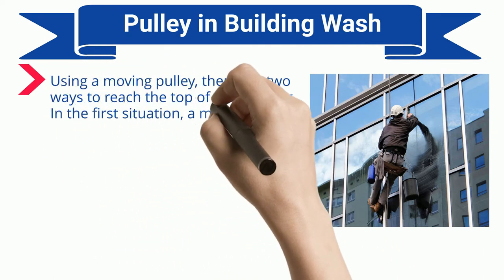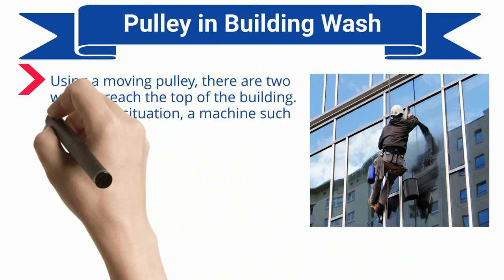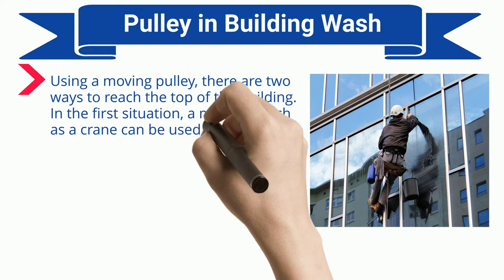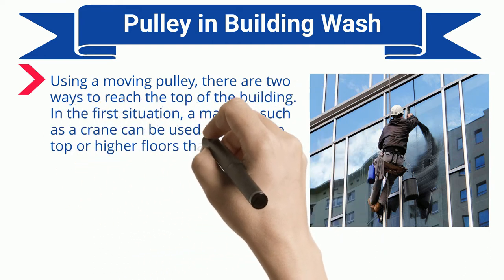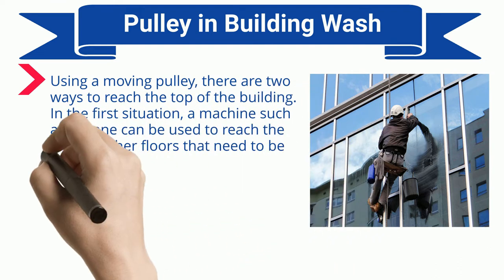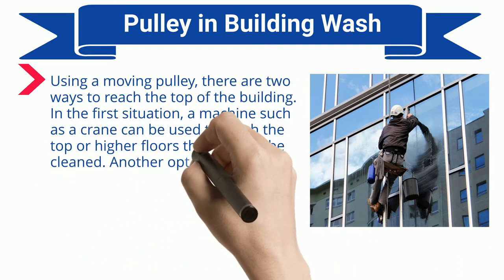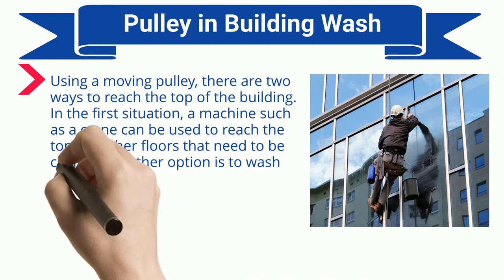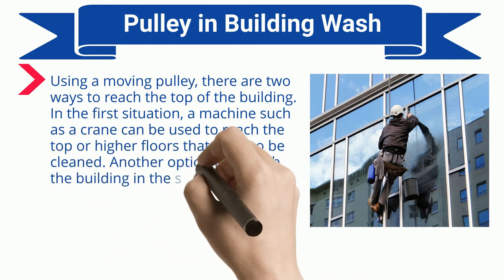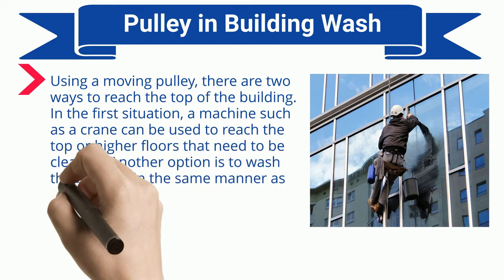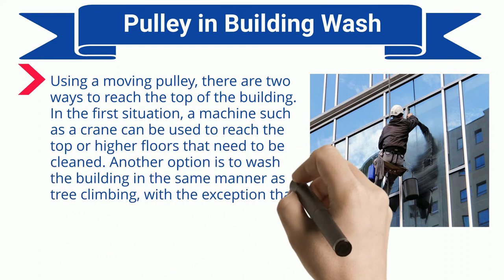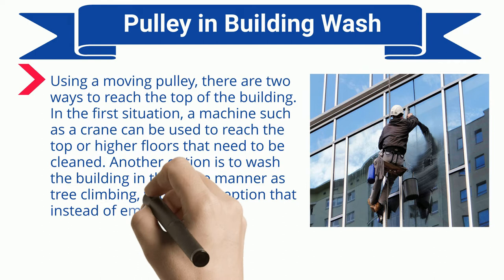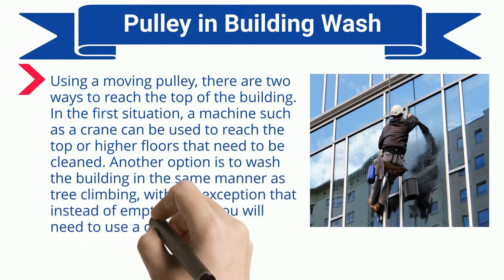Using a moving pulley, there are two ways to reach the top of the building. In the first situation, a machine such as a crane can be used to reach the top or higher floors that need to be cleaned. Another option is to wash the building in the same manner as tree climbing, with the exception that instead of empty hands, you will need to use a cleaner.